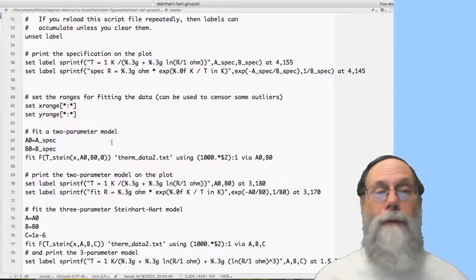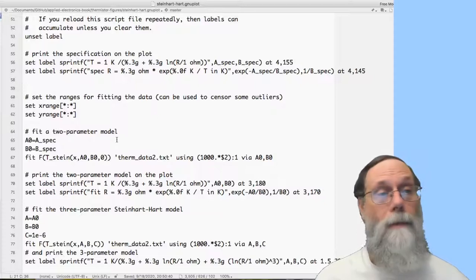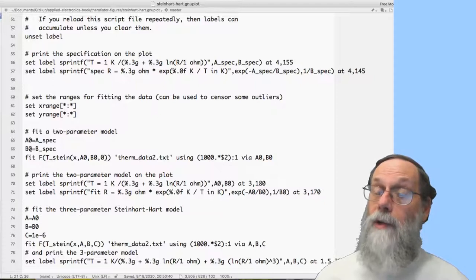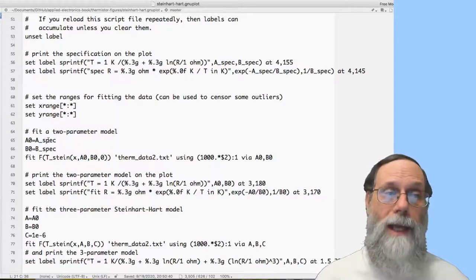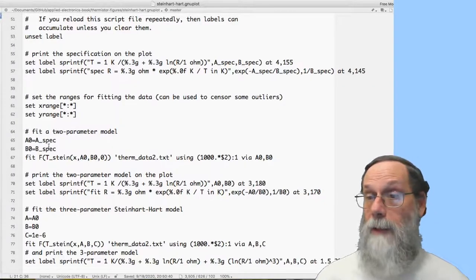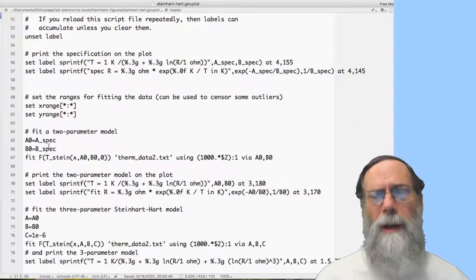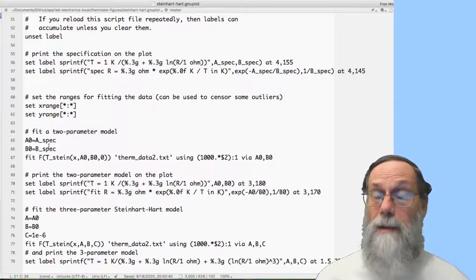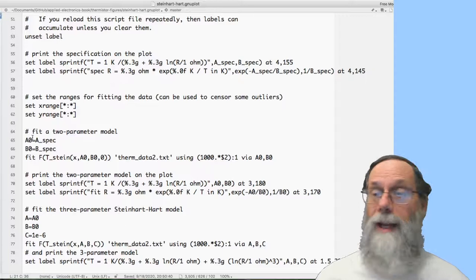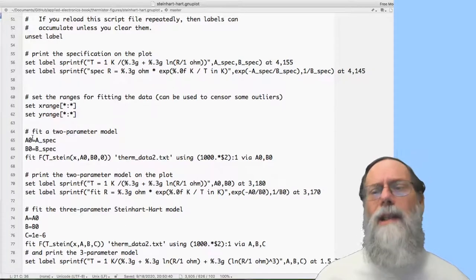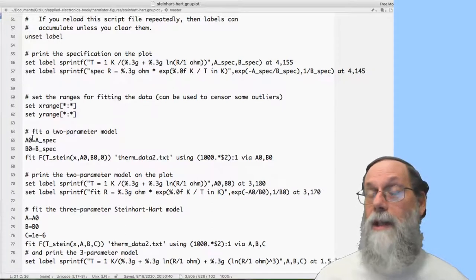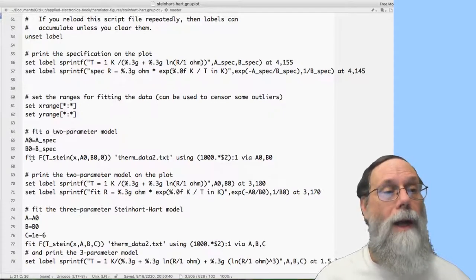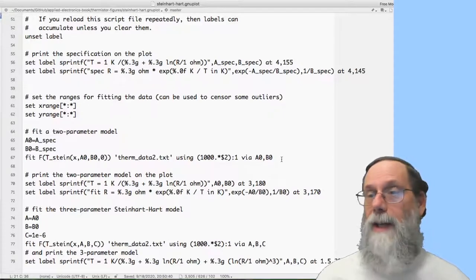Now we want to fit a two parameter model. That's the B equation model. And what we're going to do is we're going to start out A0 and B0 are going to be the results of the fit. Now we had an A spec and a B spec that came from the specification sheet, and we expect those values to be decent. So we will start as an initial guess. Let's set A0 and B0 to what the spec sheet says they ought to be. And then this is the magic line. Fit.